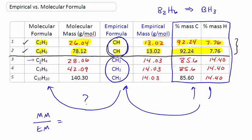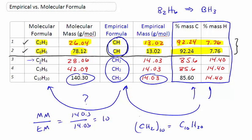Let's just take a real quick example. Let's take the 140.3 and the 14.03. That ratio is equal to 10. And if I take CH2, 10 of those, I get C10H20. So there's the connection, folks. If we can find this ratio of the molecular mass to the empirical mass, that'll tell us how to obtain the actual molecular formula from the empirical formula.